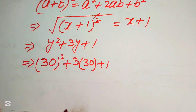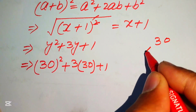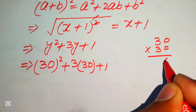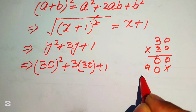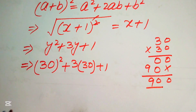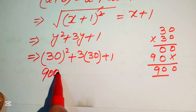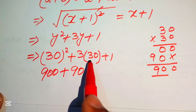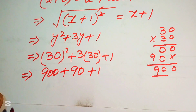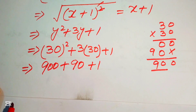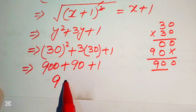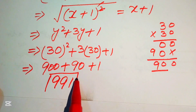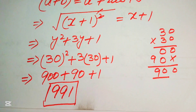Finally, 30 squared equals 900, and 3 times 30 equals 90. Adding: 900 plus 90 plus 1 equals 991. So the final answer is 991. Thank you for watching — please subscribe to my channel for more videos!